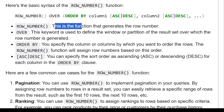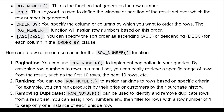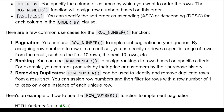ROW_NUMBER is the function that generates the row number. OVER is the keyword used to define the window or partition of the result set over which the row number function is applied. ORDER BY specifies the column or columns by which you want to order the rows — the row number function will assign row numbers based on this order. You can specify ASC or DESC sort order for each column in the ORDER BY clause.